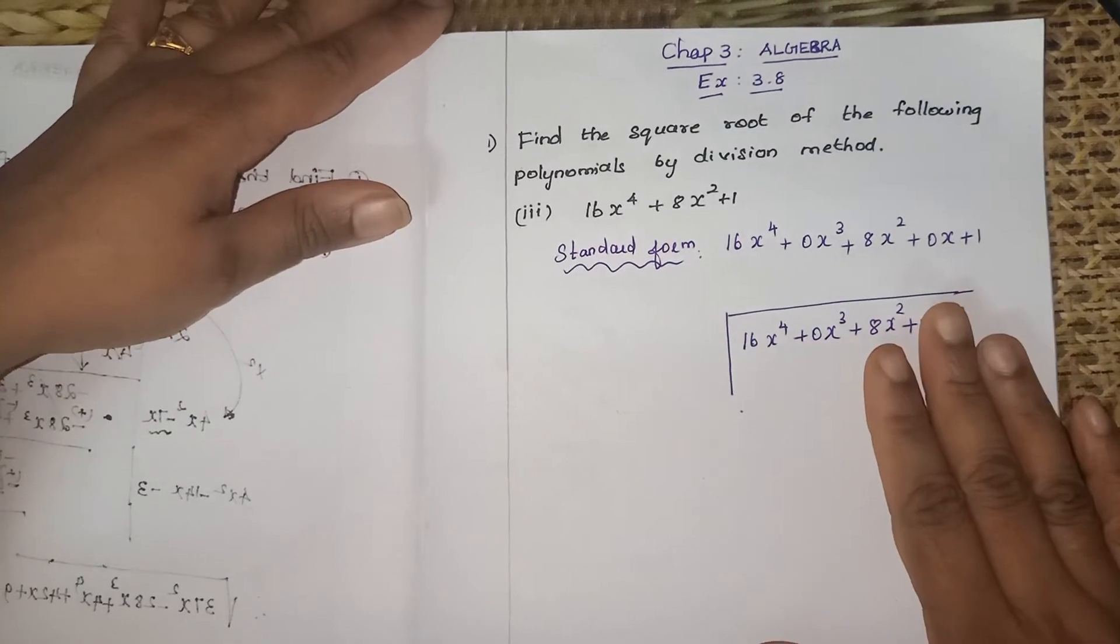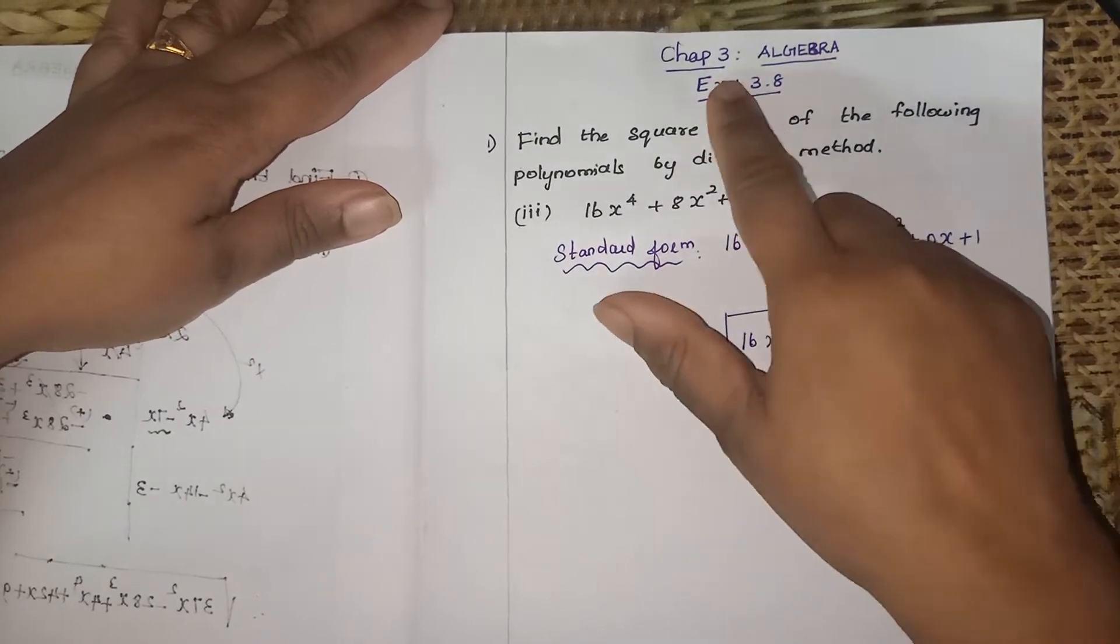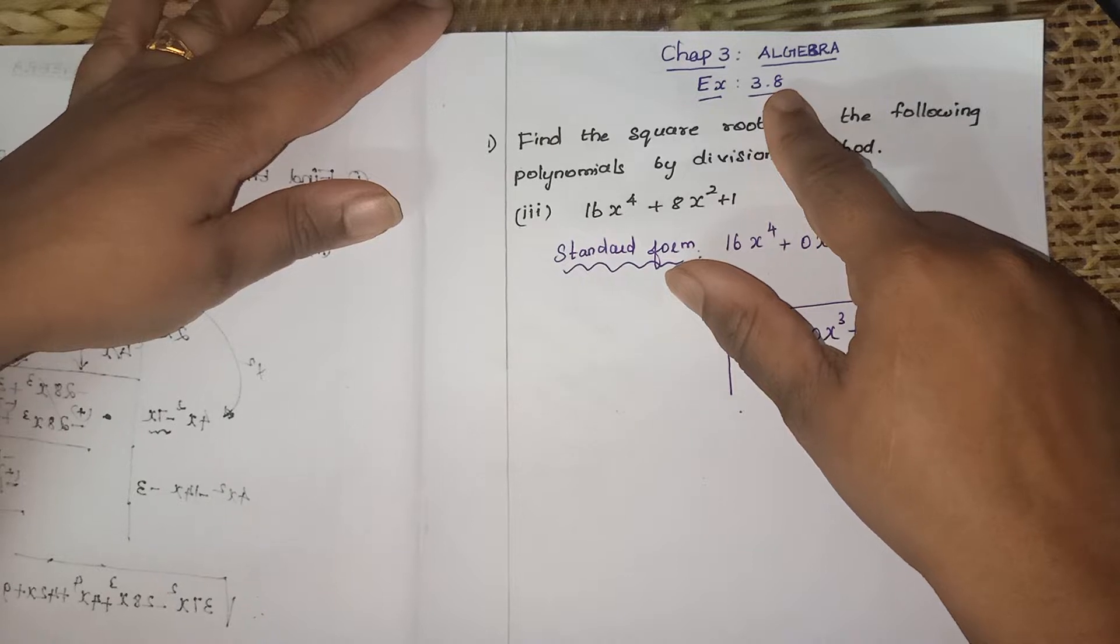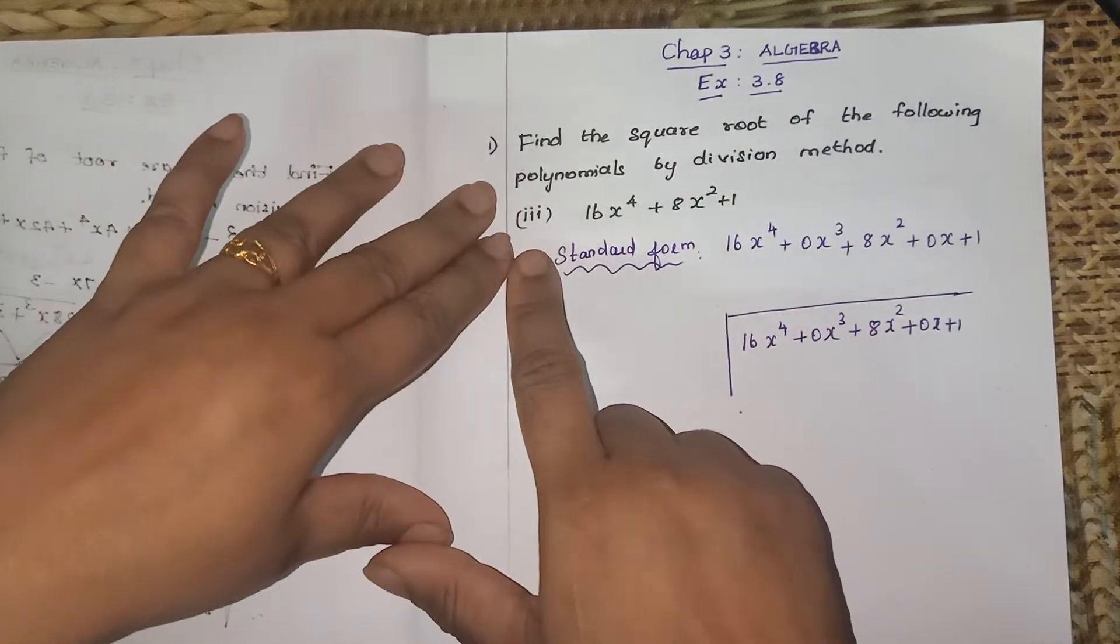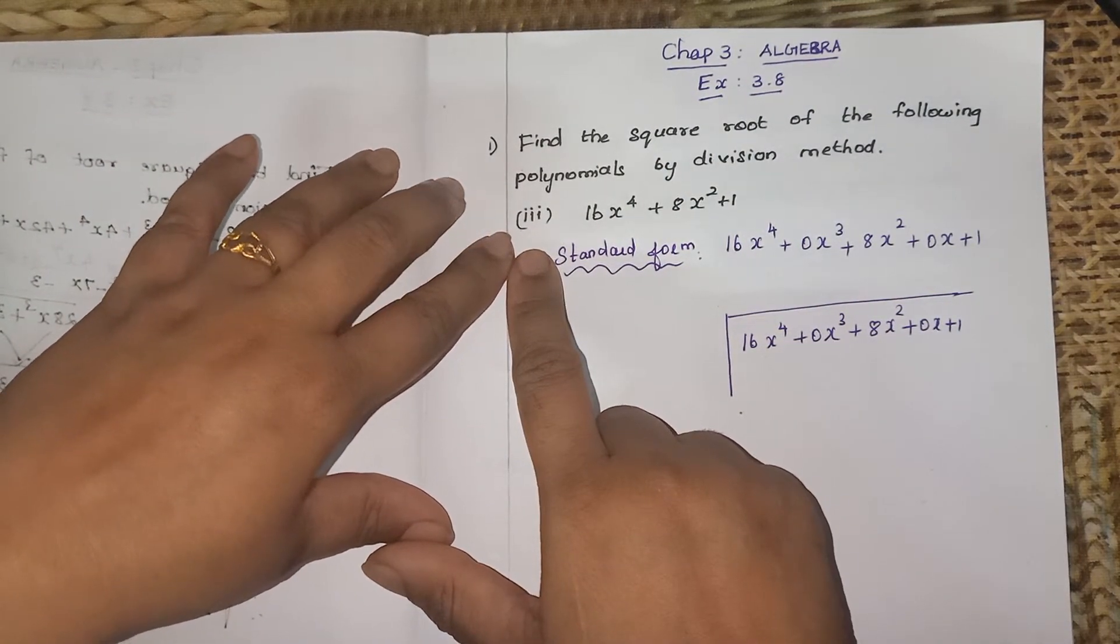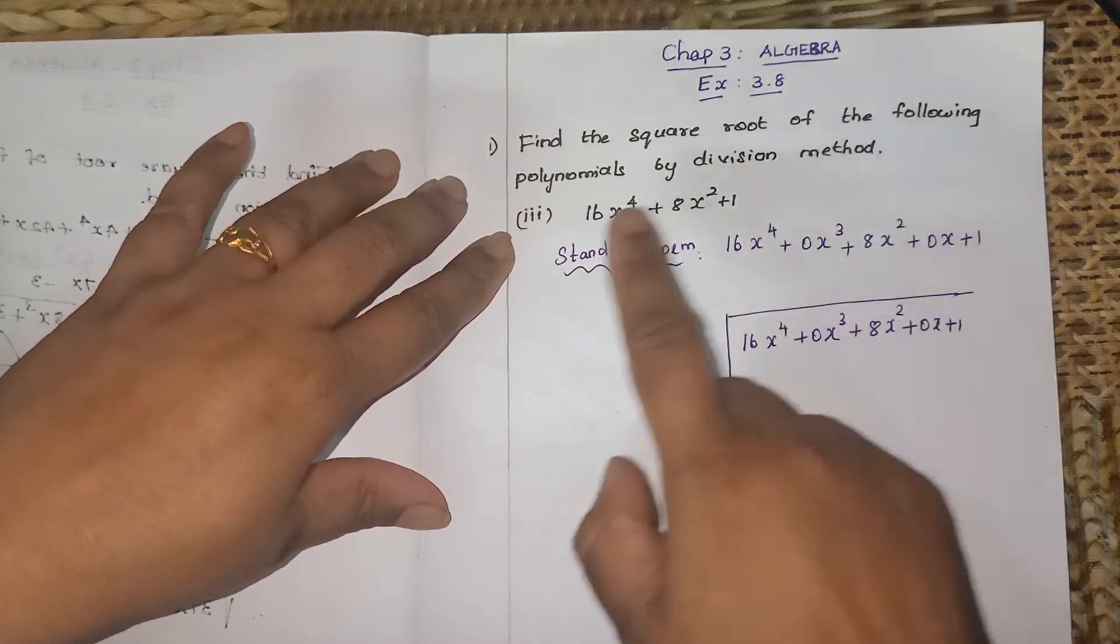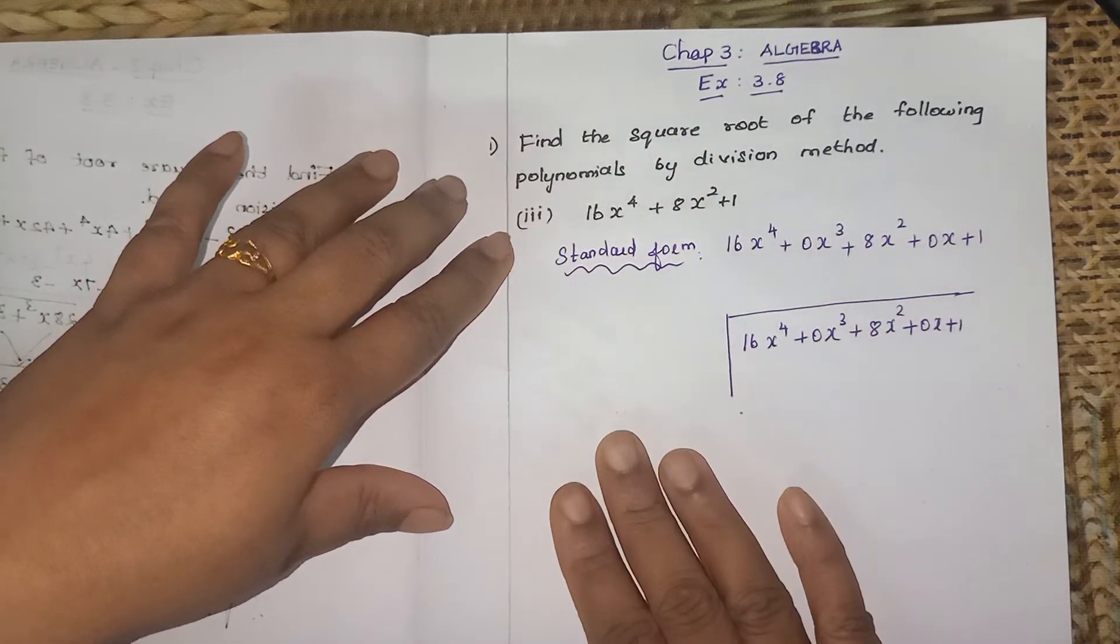Yes children, welcome to my Lomax channel. Chapter 3, Algebra, Exercise 3.8, first sum under the third subdivision. We are going to see how to find the square root of the following polynomials by division method.